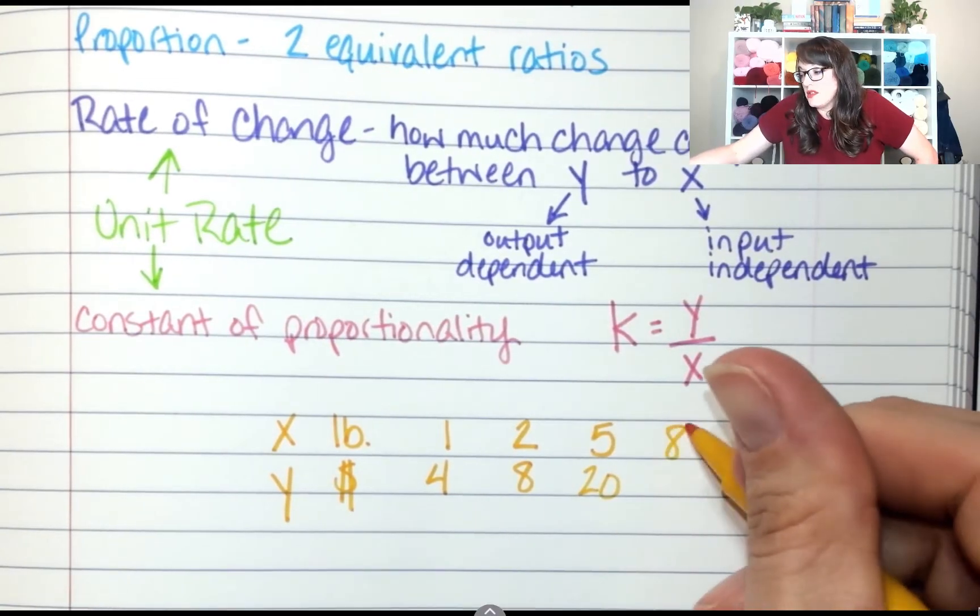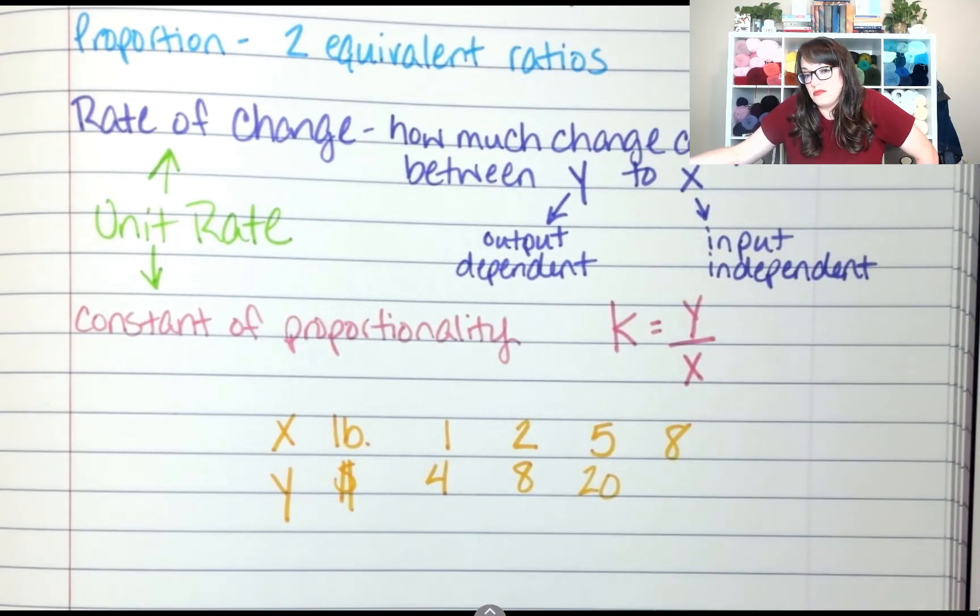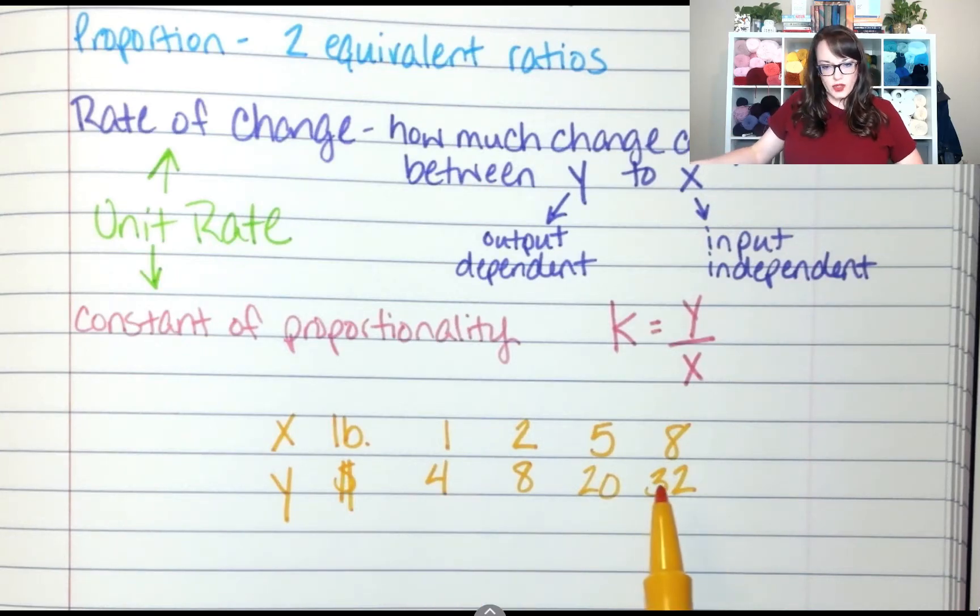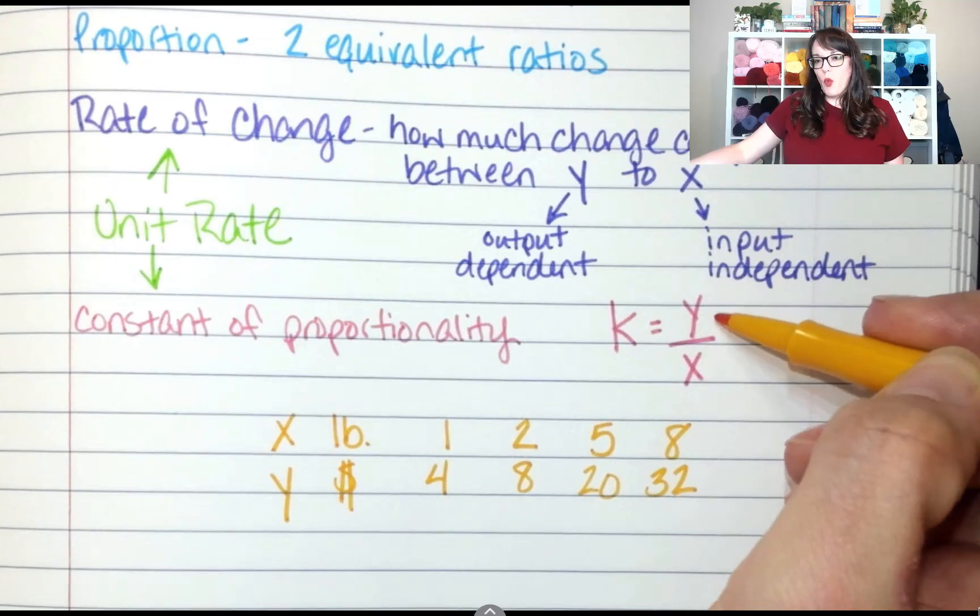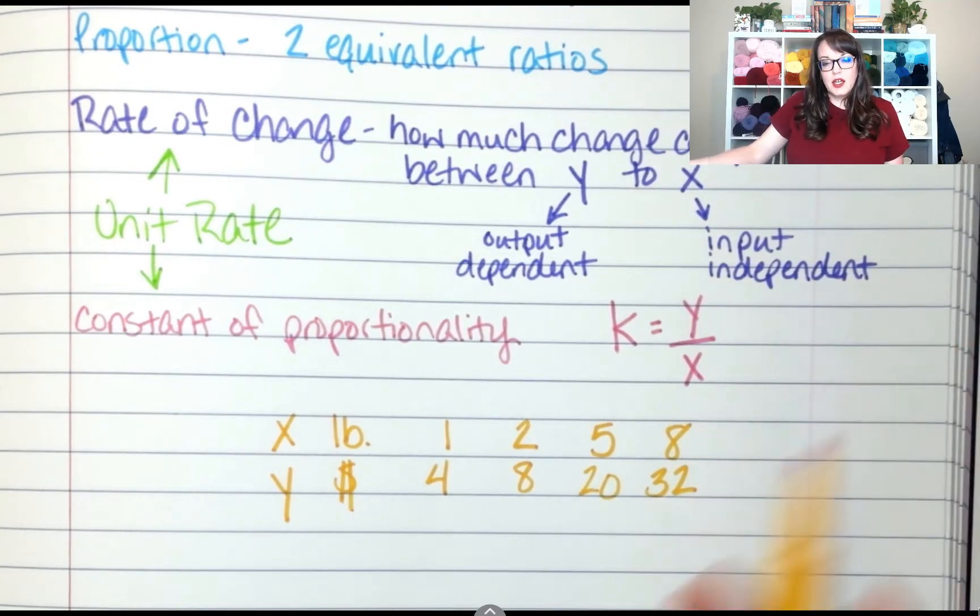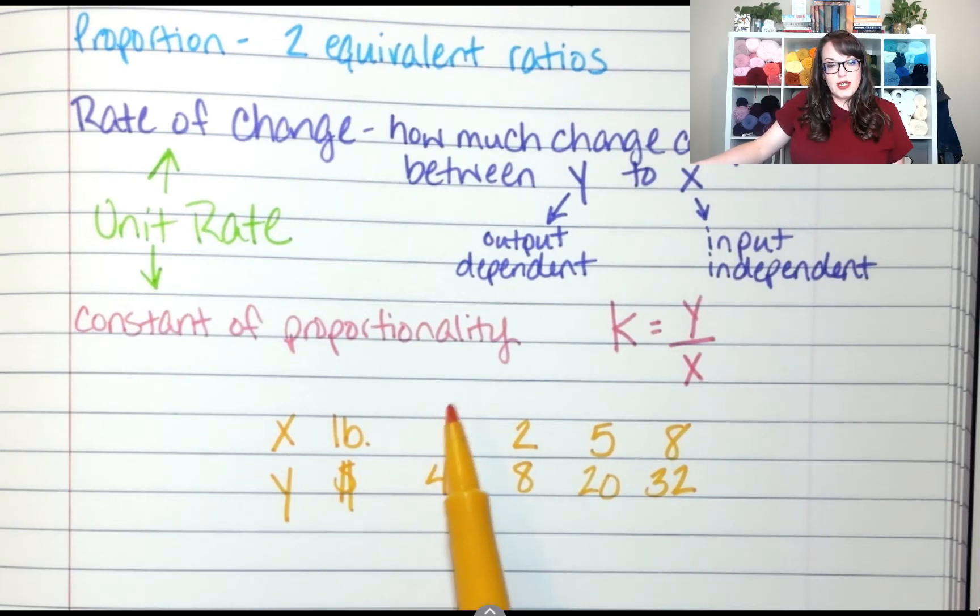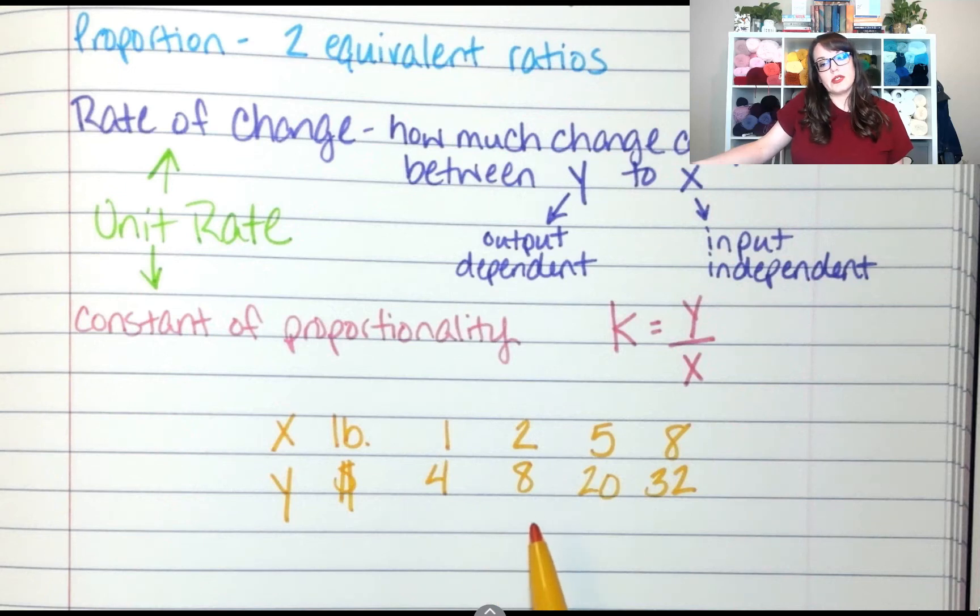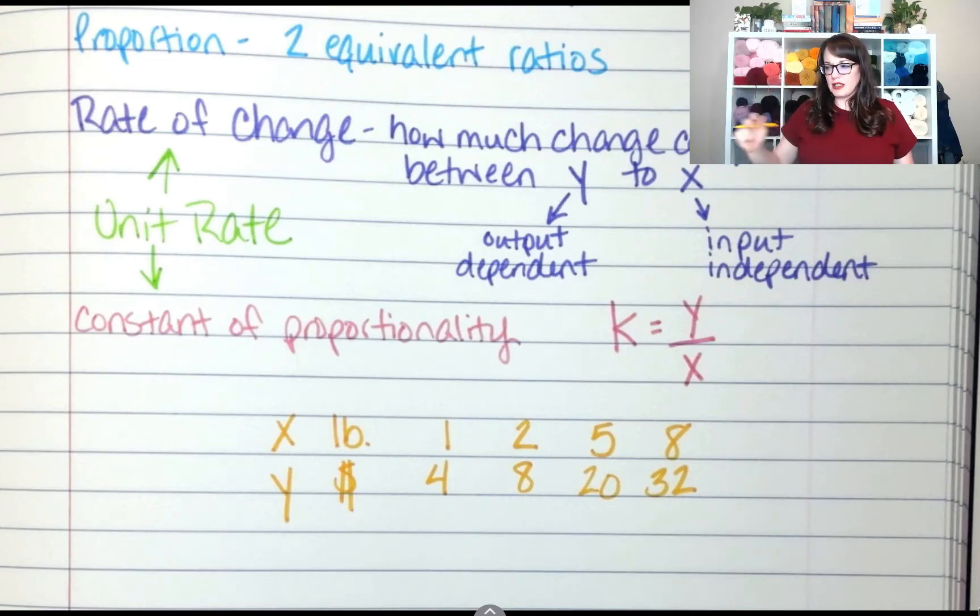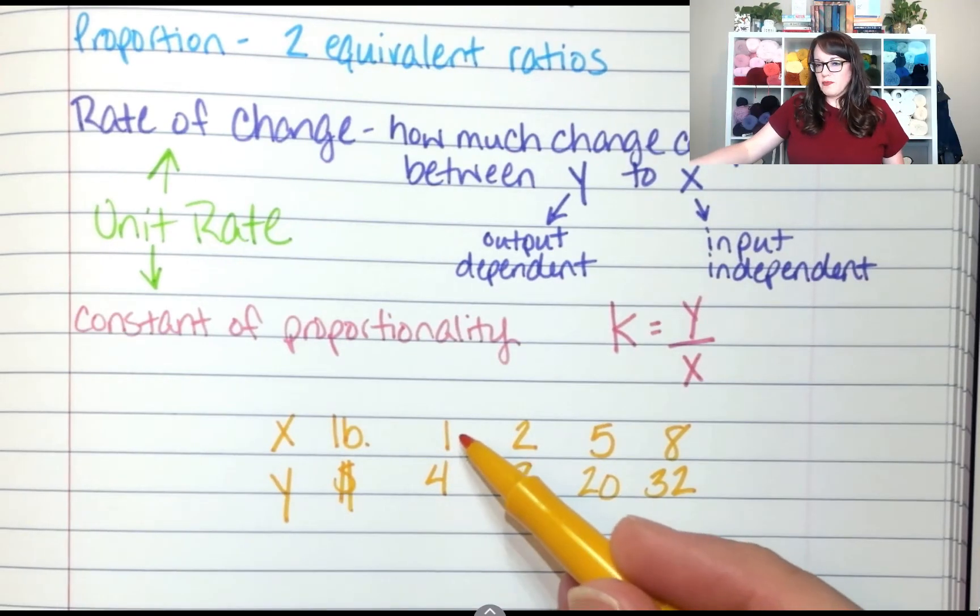So if one pound costs four dollars two pounds would cost eight dollars, five pounds would be twenty dollars, eight pounds $32. Now this relationship I don't want you to think that it has to go in some kind of order. You're looking at the relationship from y to x. You're looking this way y's to x's. You can look side to side so like one times two is two so four times two is eight. One times eight is eight so four times eight is 32.